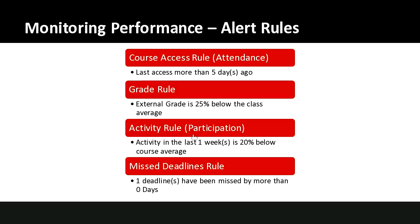There's also an activity rule: if a student's activity in the last week is 20% below the entire course average — say they've visited the discussion forums once while the rest of the class has been in there four or five times over the last week — then they'll be shown as at risk. This can be tweaked to better suit your purposes. Finally, there's the missed deadline rule. This triggers if a student misses any deadline at all — zero days past due — so if they miss any deadline, they're automatically seen as at risk. All of these can be customized.